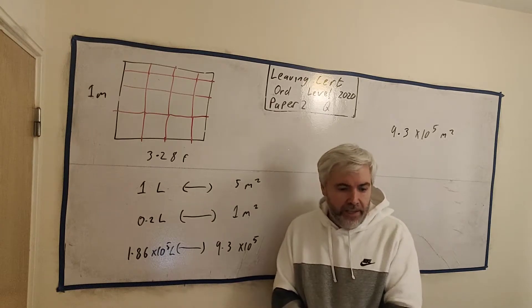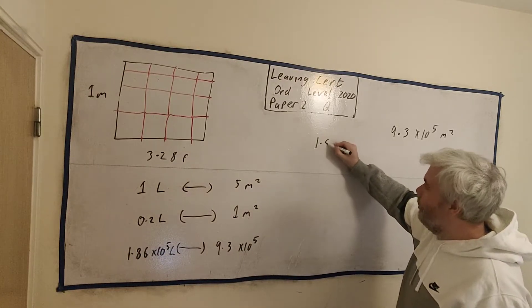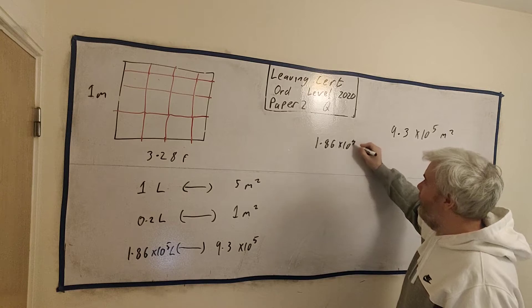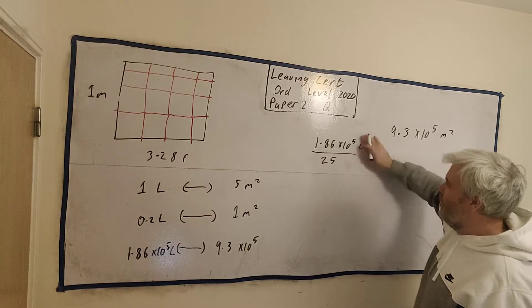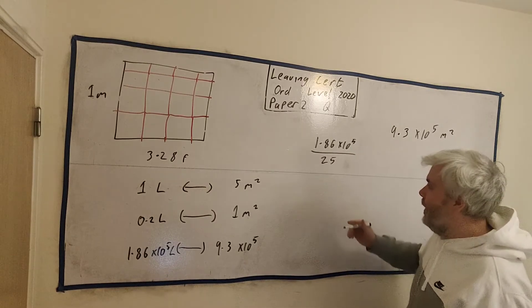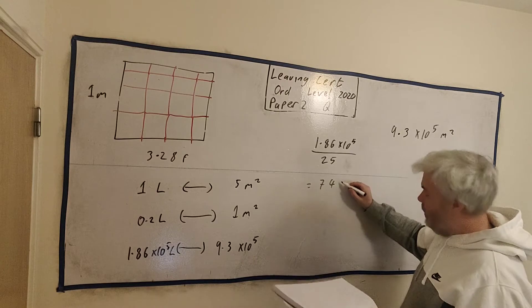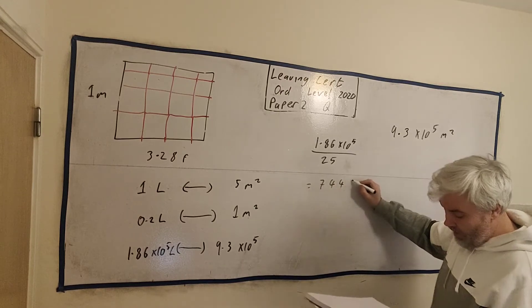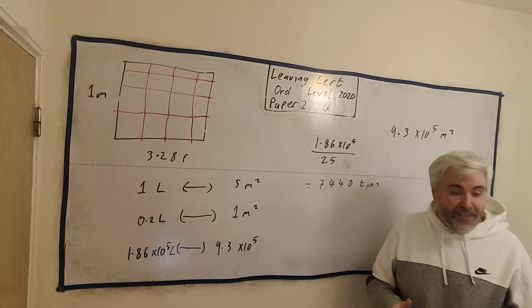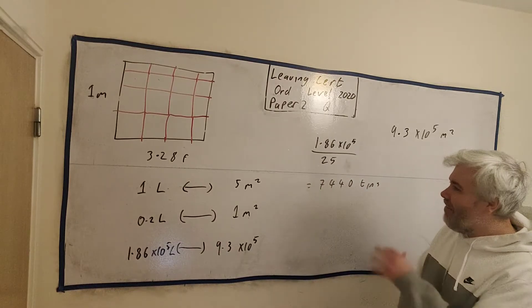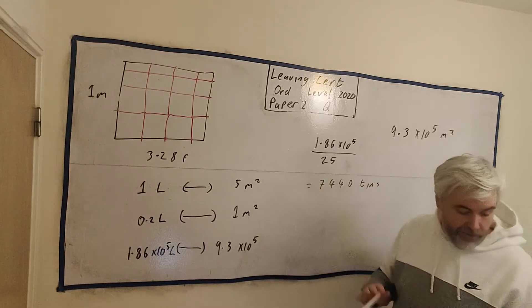They didn't ask litres, though. They asked tins of paint. 25 litres is in every tin. So, we just divide this number. 1.86 times 10 to the 5 divided by 25. This is litres, so that cancels. And this will give you how many tins of paint. Once we divide that in, it goes in evenly. 7,440 tins of paint. So that's how many tins of paint it takes to paint the Golden Gate Bridge. Now you know. If you have any follow-up questions on this, put them in the comments below. I'll rub this out again, and we'll do part B, which is unrelated to the Golden Gate Bridge.